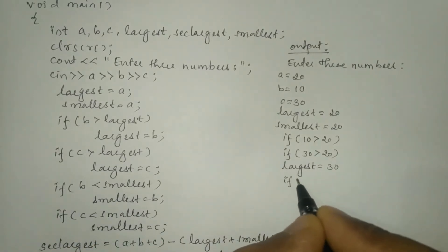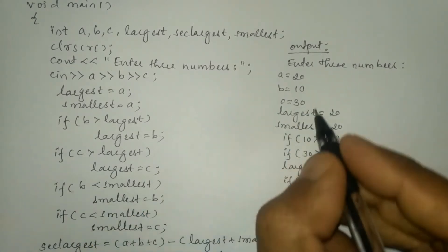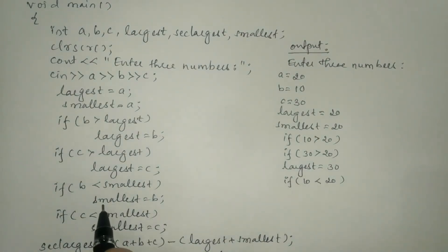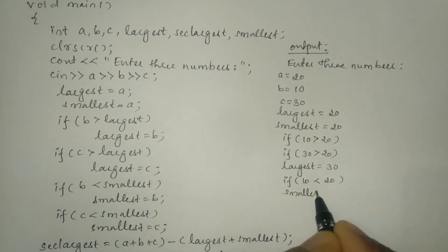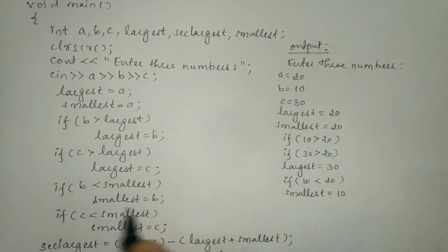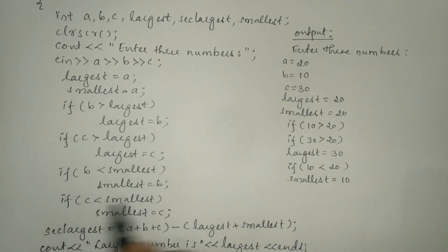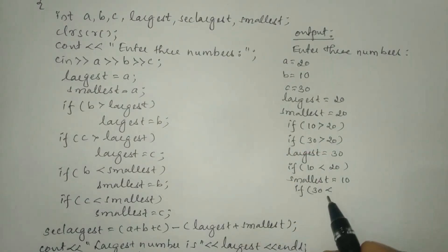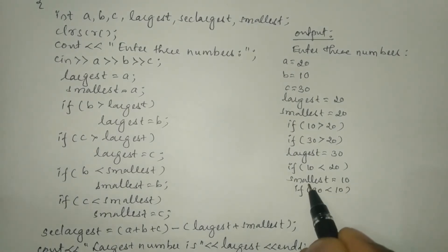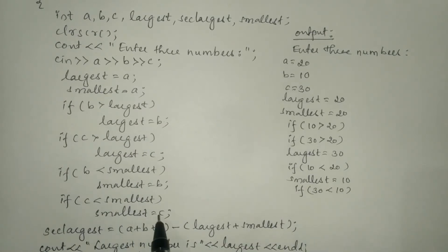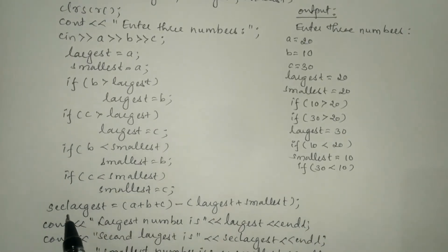Next, we check if b is less than smallest: b is 10, smallest is 20, so 10 is less than 20 — that is true, so smallest is updated to b which is 10. Then we check if c (30) is less than smallest (now 10) — 30 is not less than 10, so the condition fails and that statement does not execute.